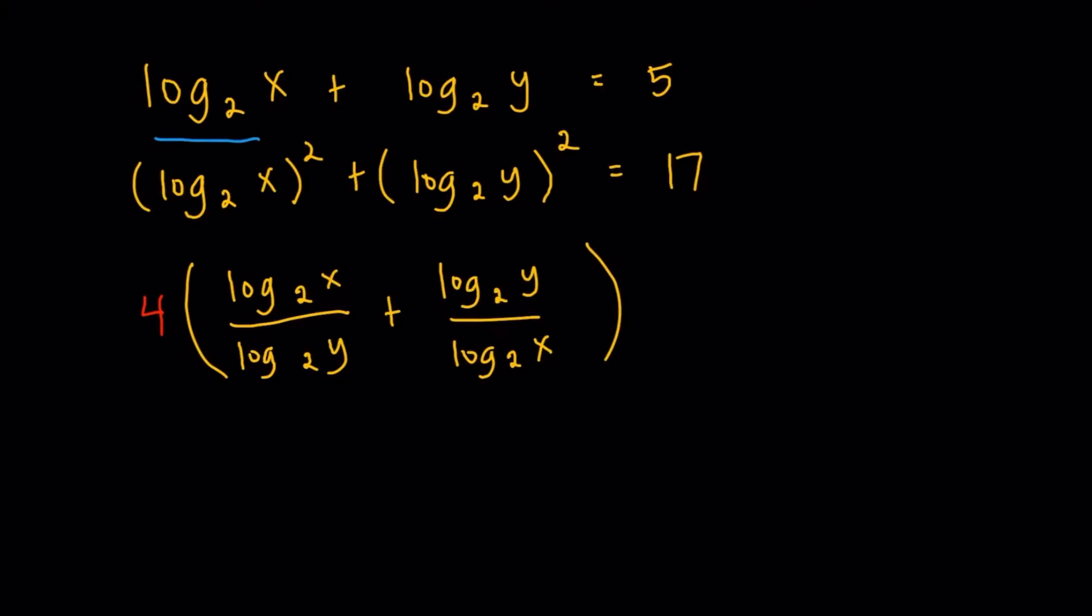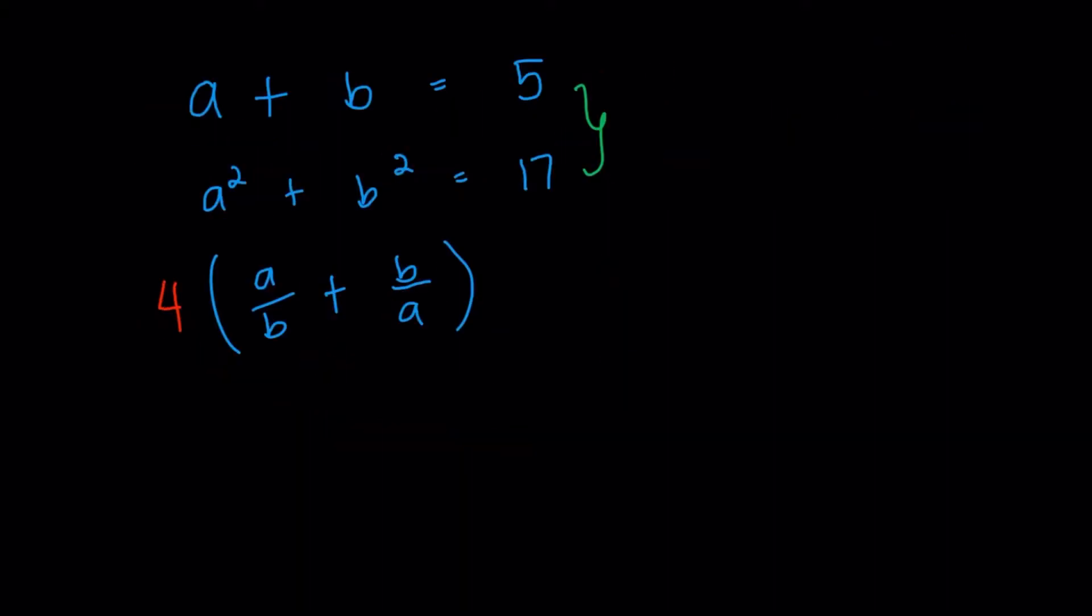So as mentioned, we do have some equations in terms of log x with base 2 and log y with base 2. And the thing we're trying to get is in terms of log x with base 2 and log y with base 2 as well. So that really motivates us to try the substitution to kind of simplify some of the things here. Let's try to say a is going to be logarithm of x with base 2 and let b to be logarithm of y with base 2. Now, if I make the substitution, this will be the resulting system of equations here. So a plus b equals 5. a squared plus b squared equals 17. And I'm asked the value of 4 times a over b plus b over a.